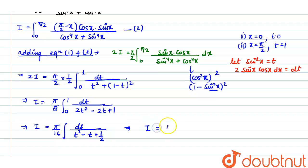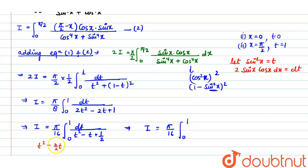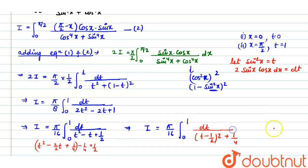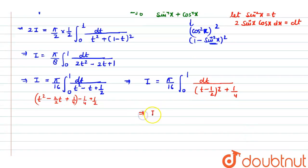Now using the completing the square method: t² − t + 1/2. We rewrite as (t − 1/2)² + (1/2 − 1/4) = (t − 1/2)² + 1/4. Since 1/4 = (1/2)², the denominator is now in the form (t − 1/2)² + (1/2)², which matches the standard arctan identity.